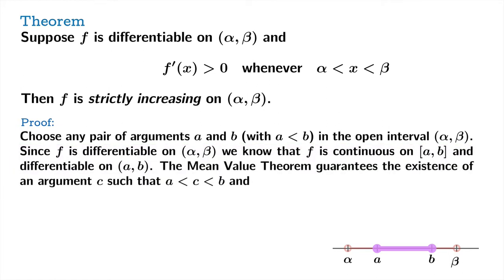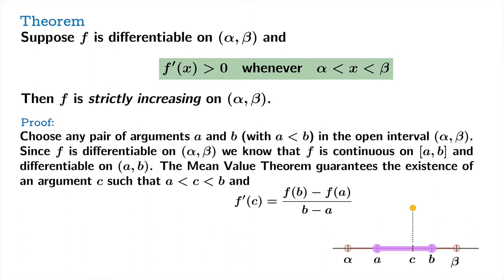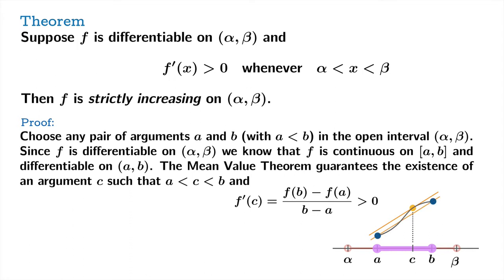The mean value theorem applied to the closed interval from a to b guarantees the existence of an argument c somewhere between a and b, where the value of the derivative at c is actually equal to the average rate of change of f on the interval from a to b. Now we also know by hypothesis that the derivative value is always positive everywhere on this open interval, so we know that this derivative value is positive. The secant slope is the same as that tangent slope, so we know the endpoints a comma f of a and b comma f of b have to give an increasing graph.